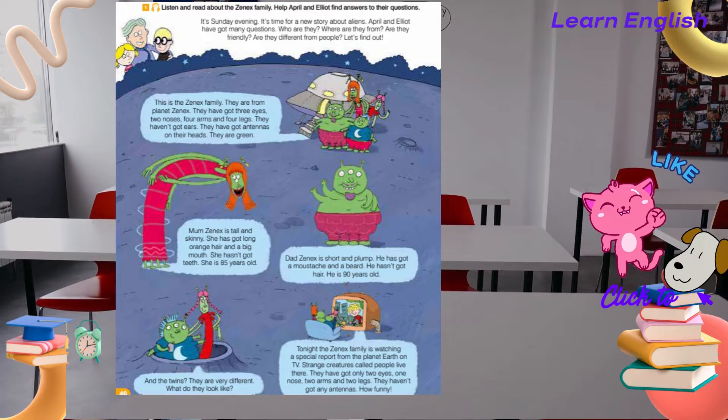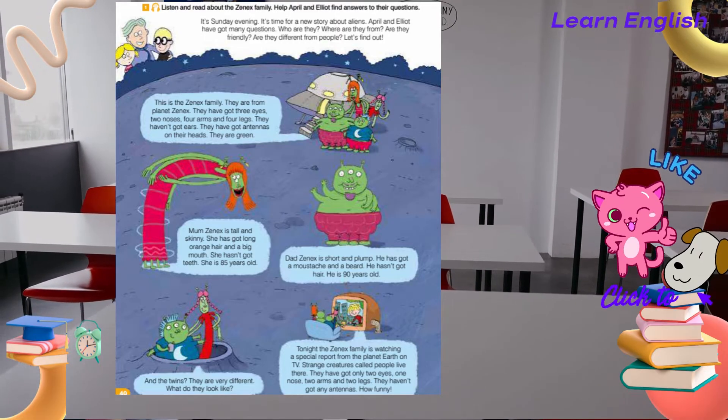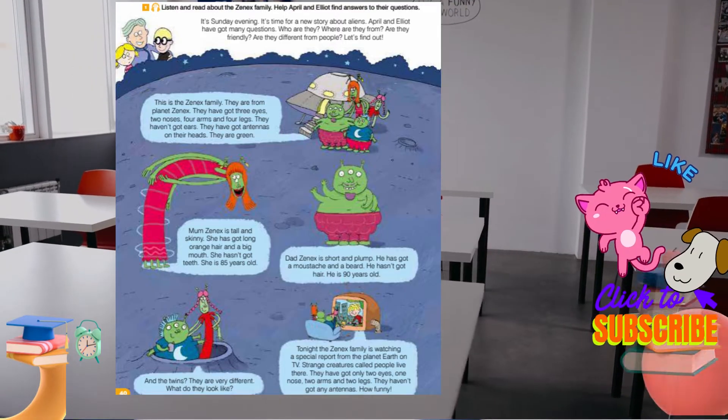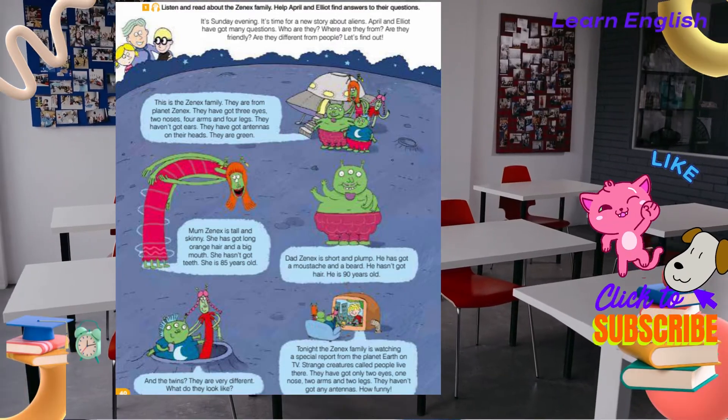Dad Xenex is short and plump. He has got a moustache and a beard. He hasn't got hair. He is 90 years old.